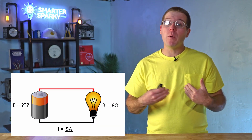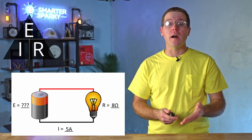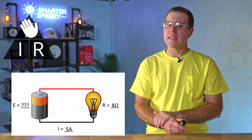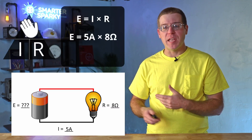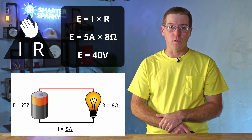Finally, we have this example. Now we know the current and the resistance, but we don't know the applied voltage. Grabbing the triangle, we cover up E — remember, E is voltage — which leaves I right next to R, meaning E equals I times R. Plugging in our values: E equals 5 amps times 8 ohms, and that calculates out to E equaling 40 volts. Quick note: if you like this teaching style and find this video helpful, please take a second to like and drop a comment.